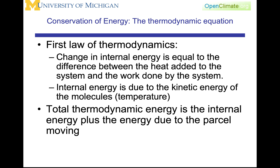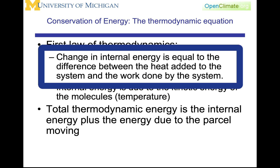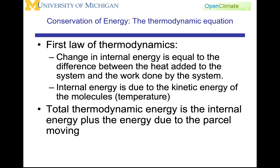The conservation of energy — the thermodynamic equation we will consider in dynamic meteorology — states that the change in internal energy is equal to the difference between the heat added to the system and the work done by the system. The change in internal energy is the difference between the heat and the work done by the system. Since heat and work are both energy, you can see the natural relationship to internal energy.